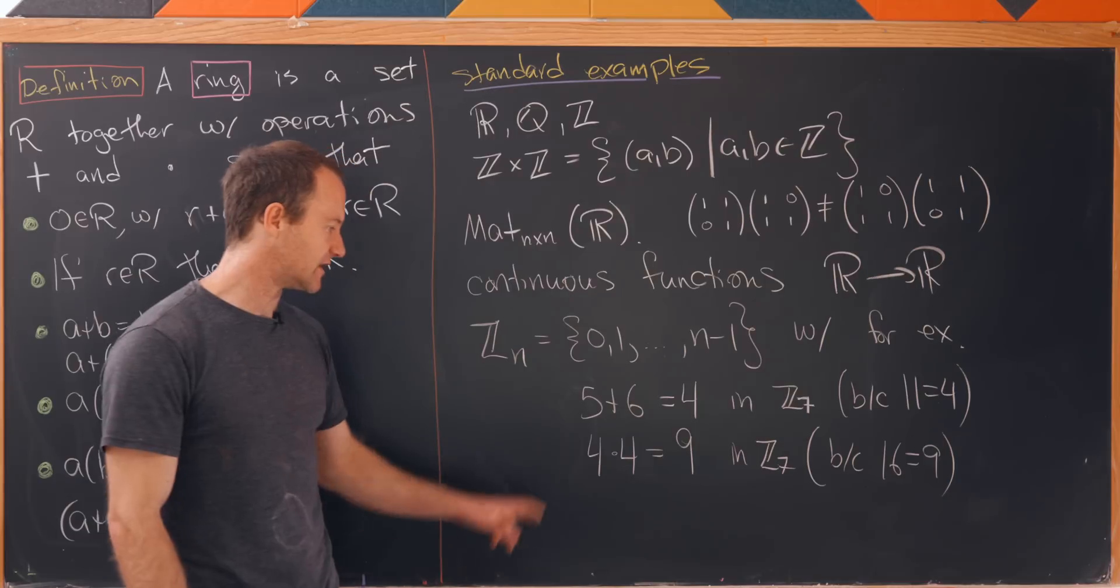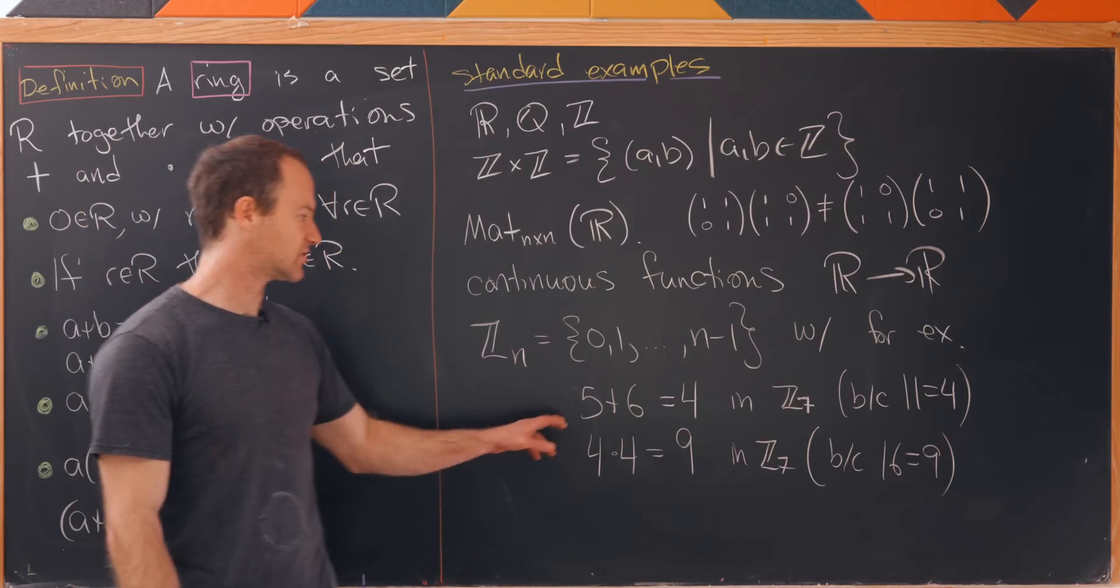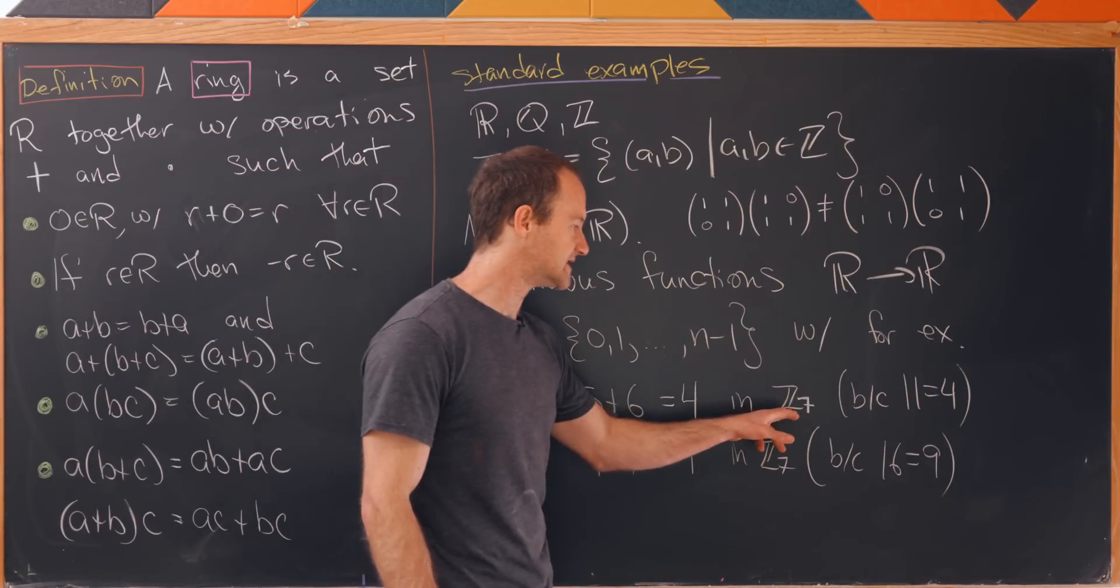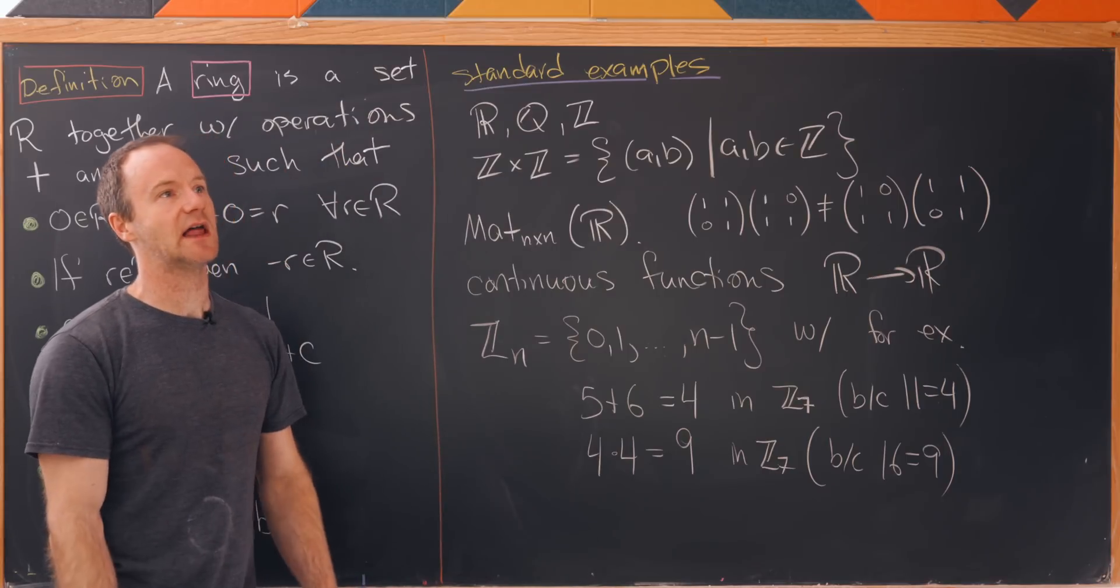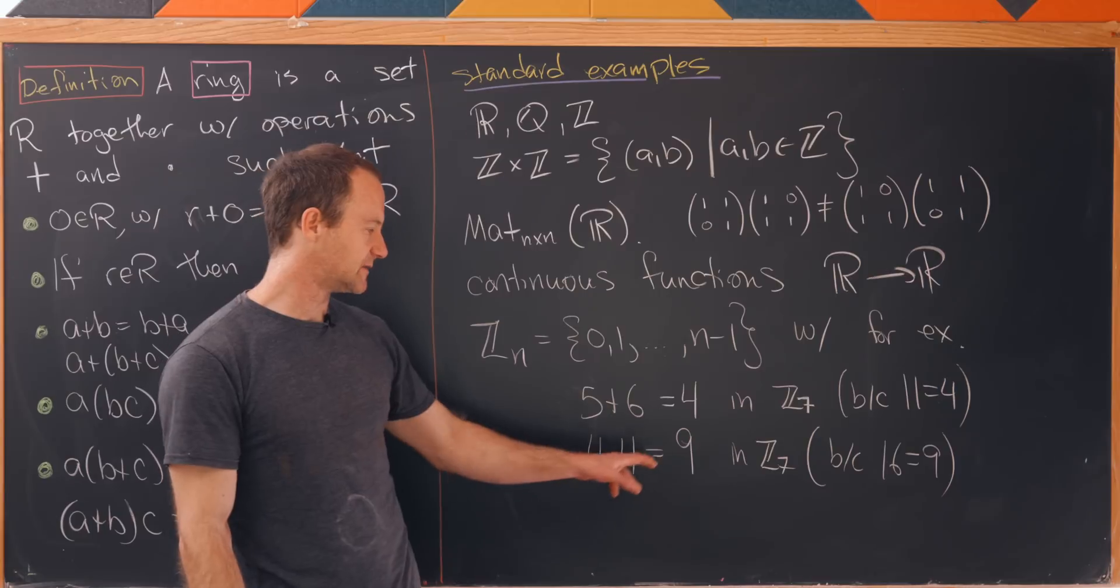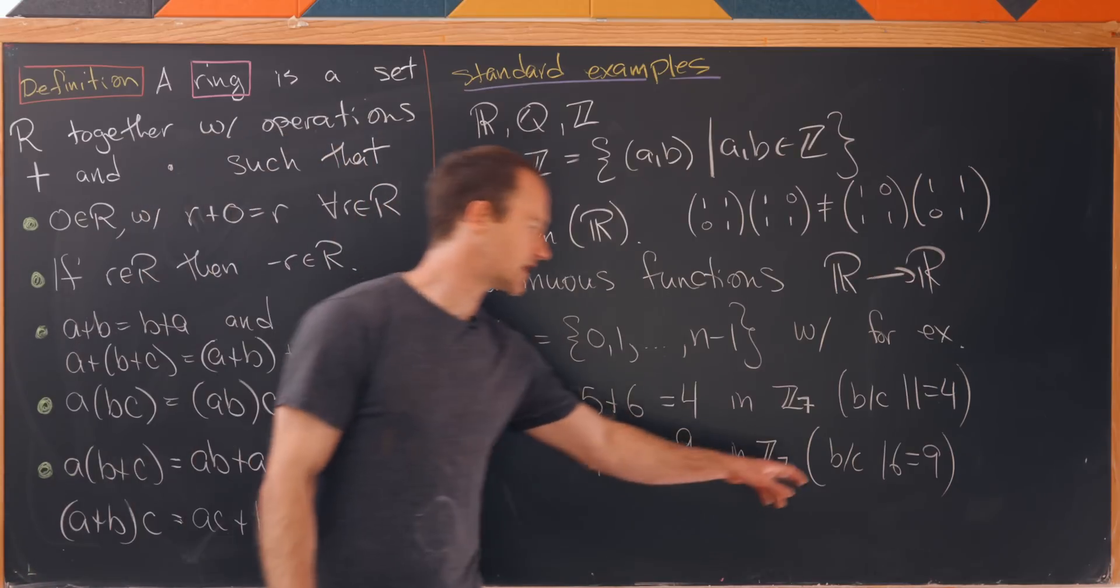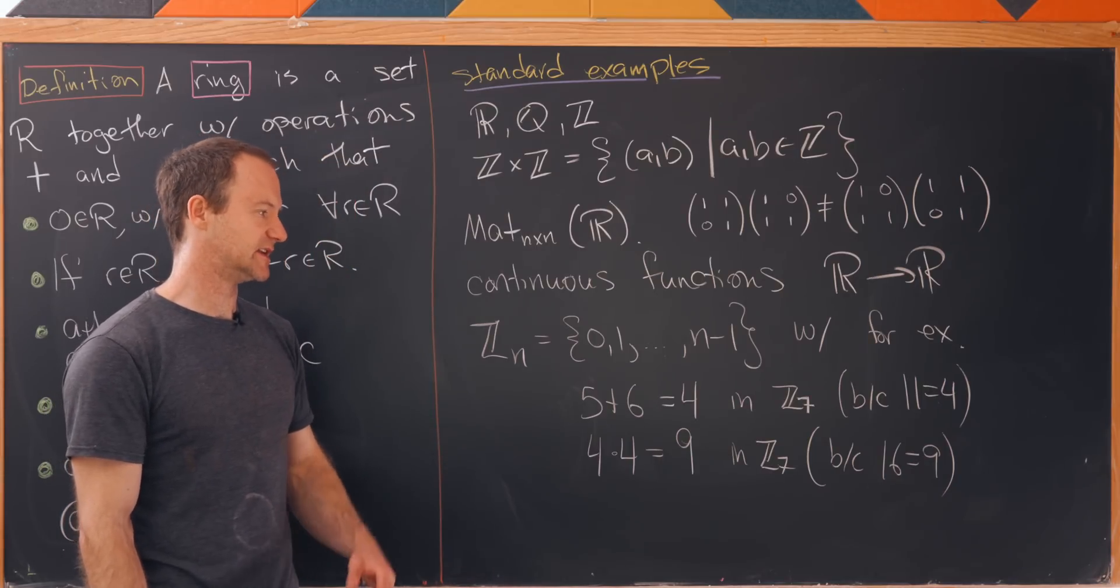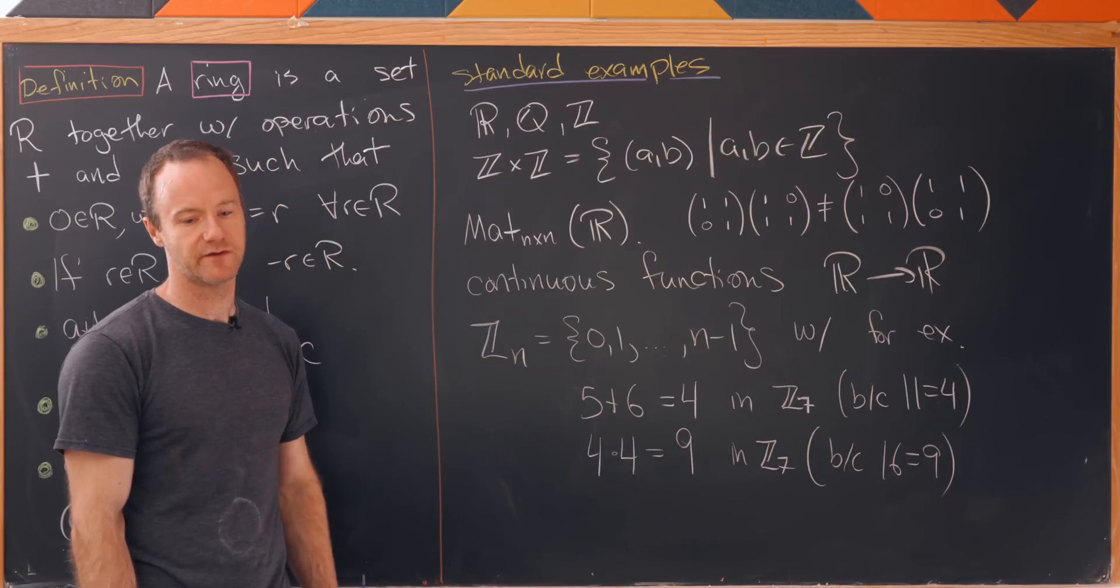So inside of Z_7, 5 plus 6 would be equal to 4. So that seems crazy but 5 plus 6 is 11. But inside of Z_7, 11 is equal to 4. That's because if you divide 11 by 7 you get a remainder of 4. And then similarly 4 times 4 is equal to 9 inside of Z_7. That's because 16 which is 4 times 4 is equal to 9 in Z_7. If you divide 16 by 7 you get a remainder of 9.